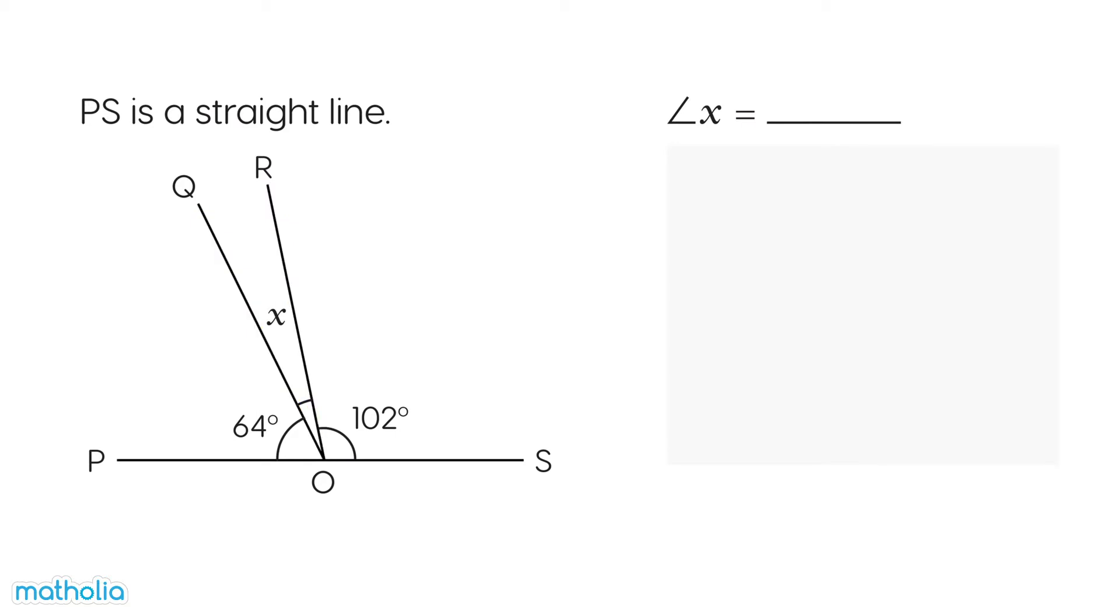Recall that the sum of the angles on a straight line is 180 degrees. So angle X is equal to 180 degrees minus angle POQ minus angle ROS.